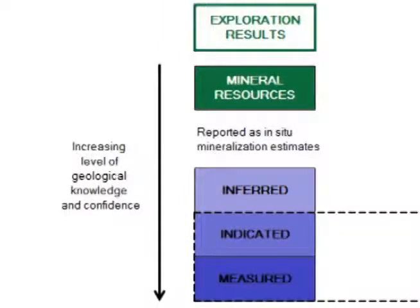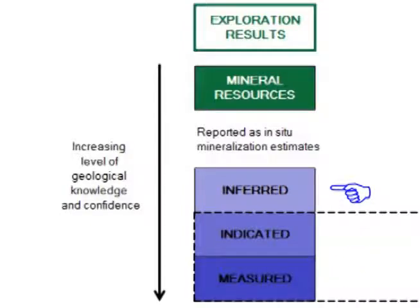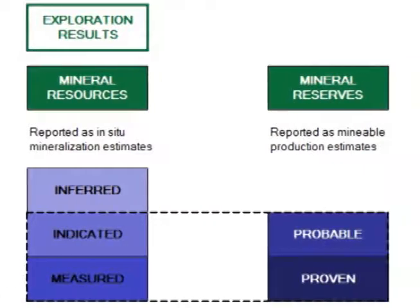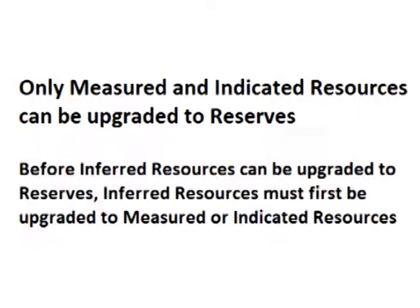You may remember from the video on mineral resources that resources are split into three categories based on the level of confidence in the results from the testing: measured mineral resources, indicated mineral resources, and inferred mineral resources. Mineral reserves have only two categories based on level of confidence: proven reserves and probable reserves. The level of confidence in inferred mineral resources is not high enough to directly convert inferred resources to reserves without inferred resources first being upgraded to measured or indicated resources through more testing.